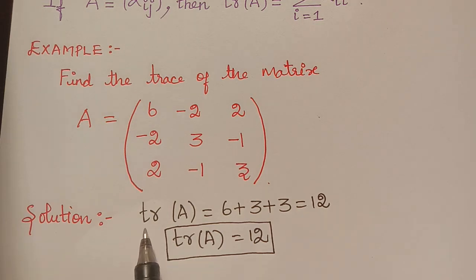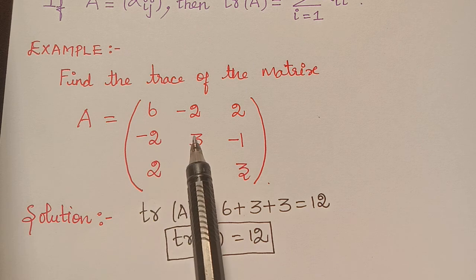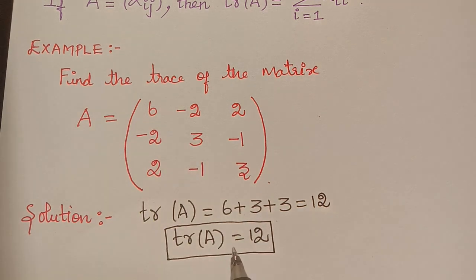So I have written that here: trace of A is equal to the sum of the diagonal elements, 6 plus 3 plus 3, which is 12.